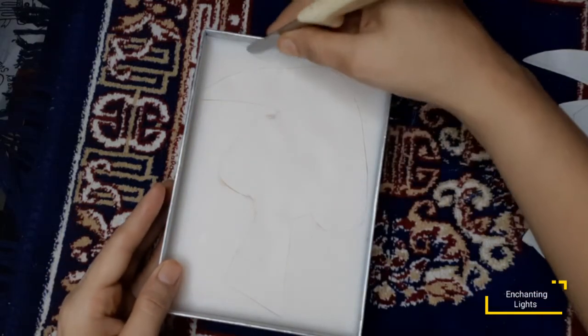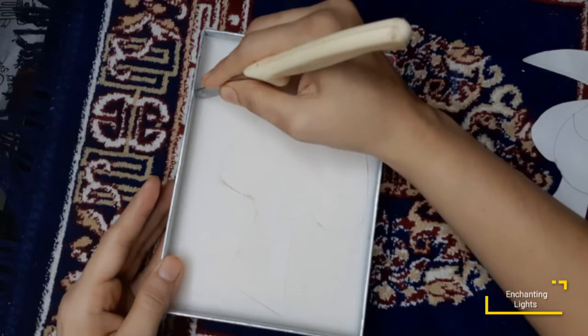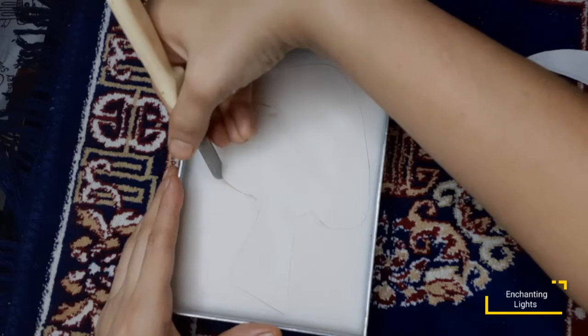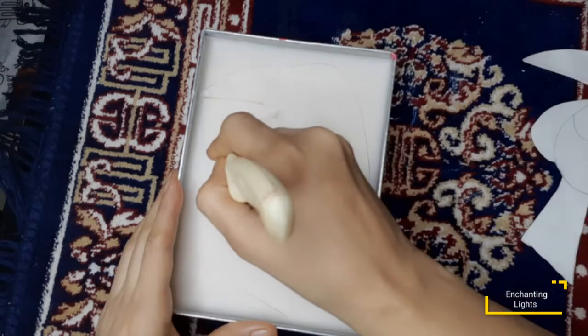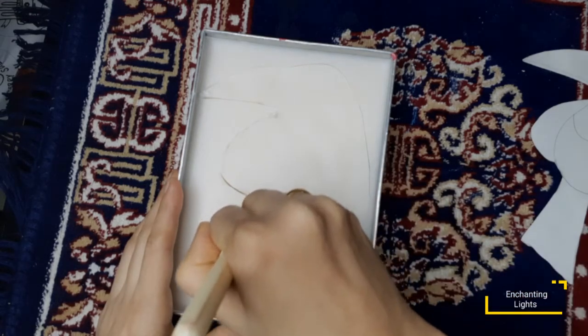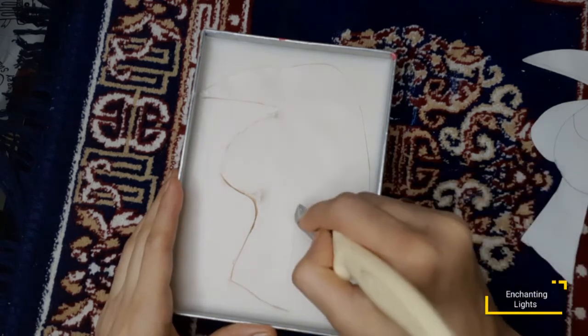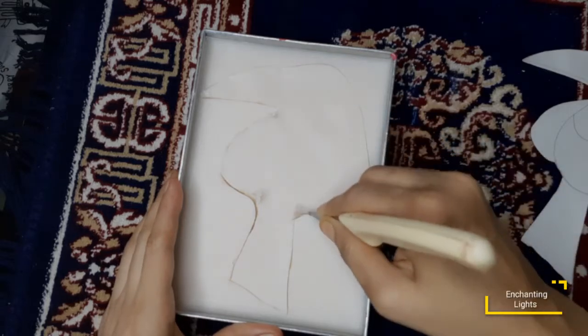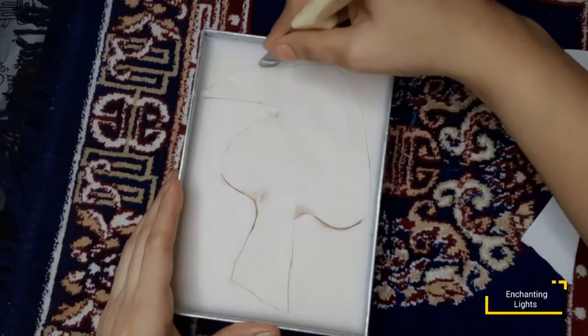Now I have cut the entire shape of the toucan. Now just run your knife till the end of the tray so that all the wax that is there will retain the shape of the toucan. Do this very slowly and carefully.